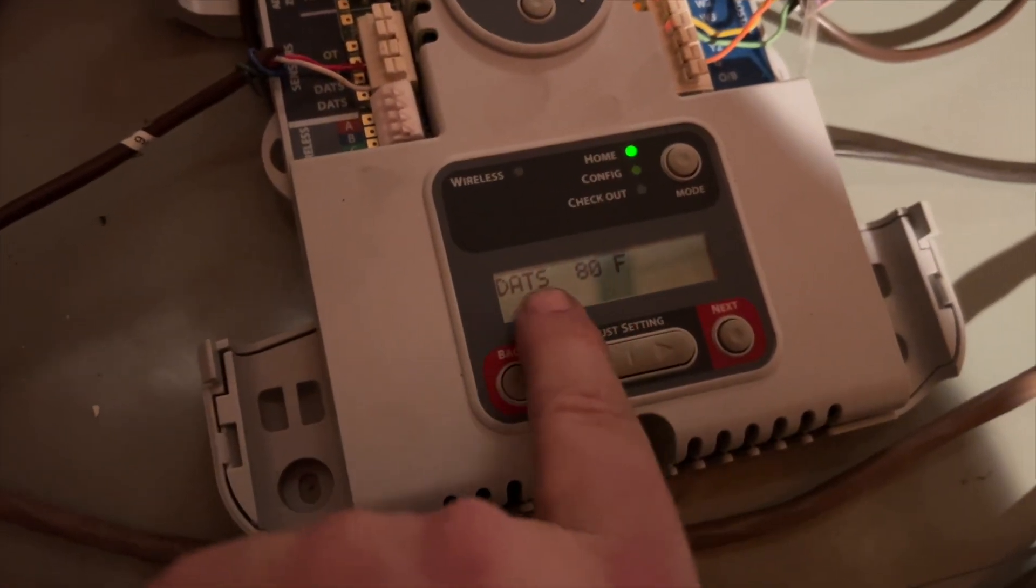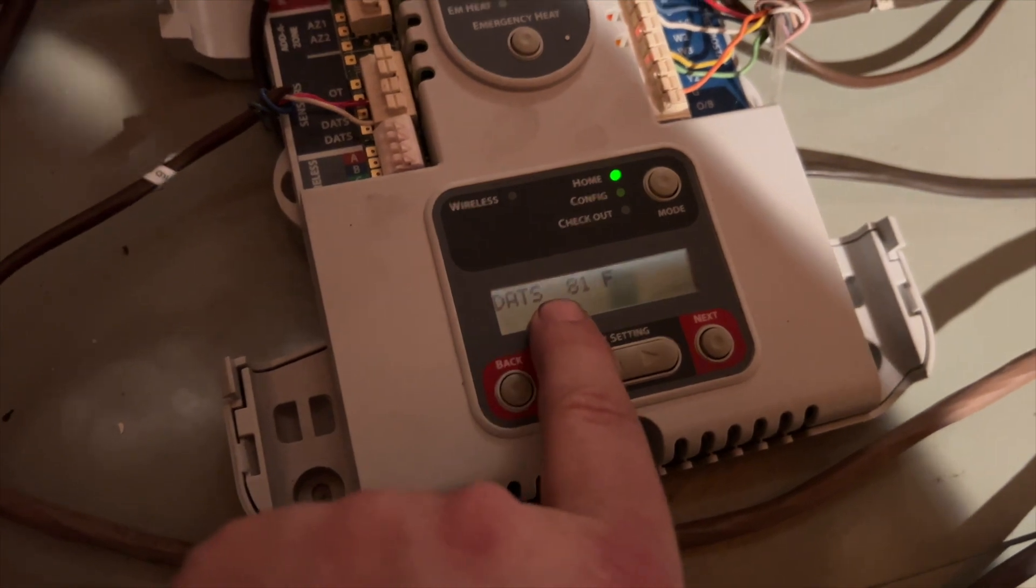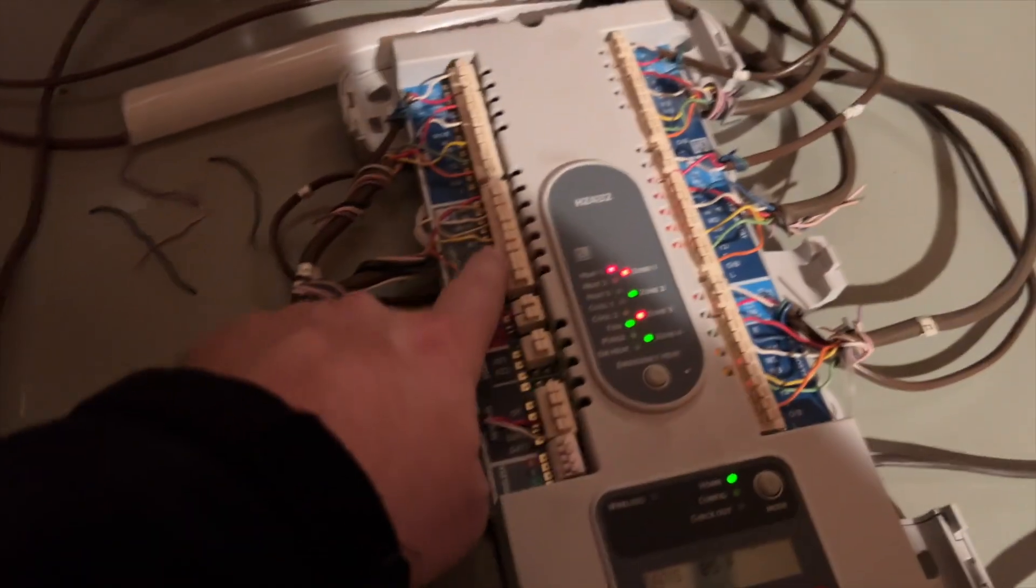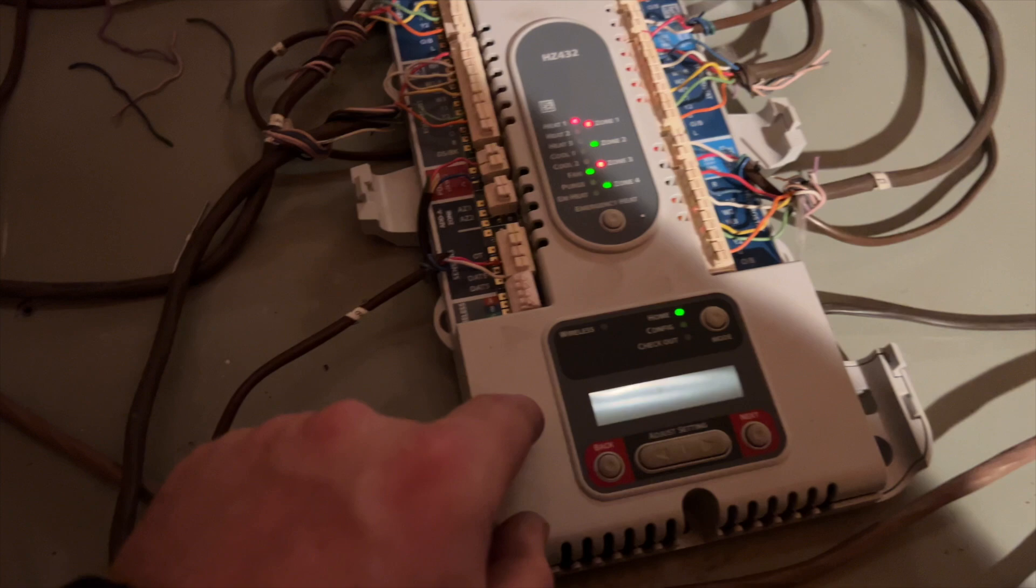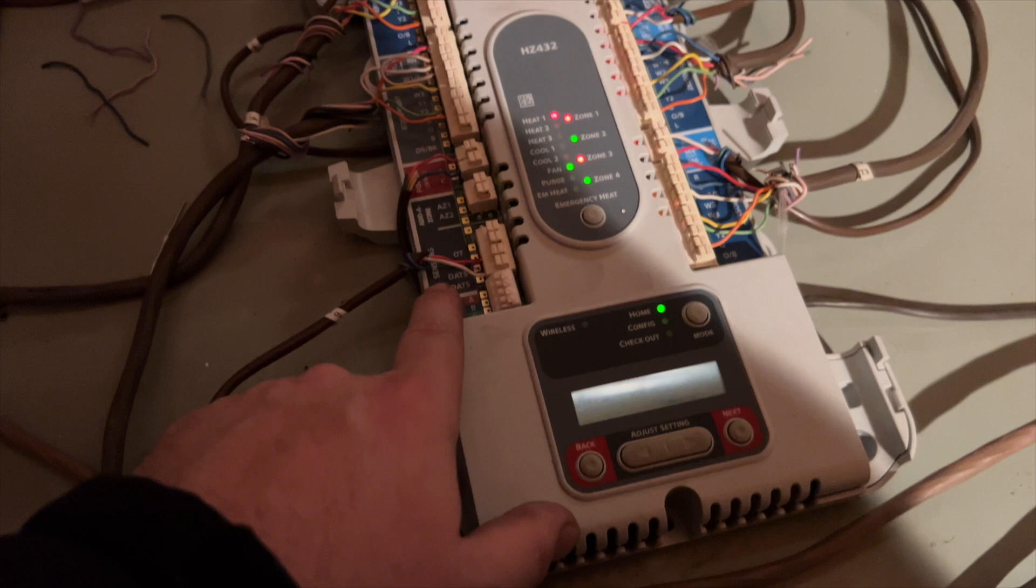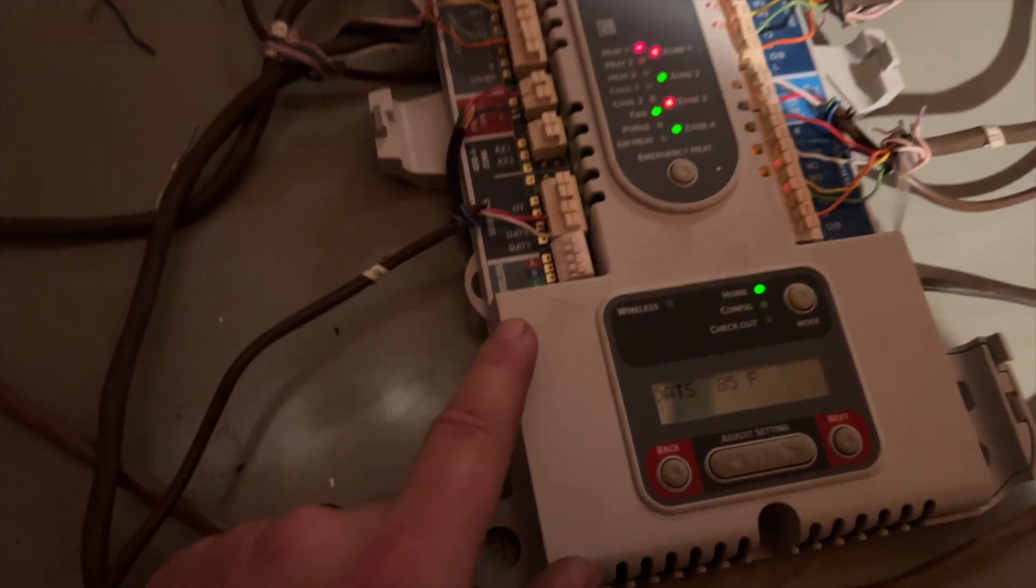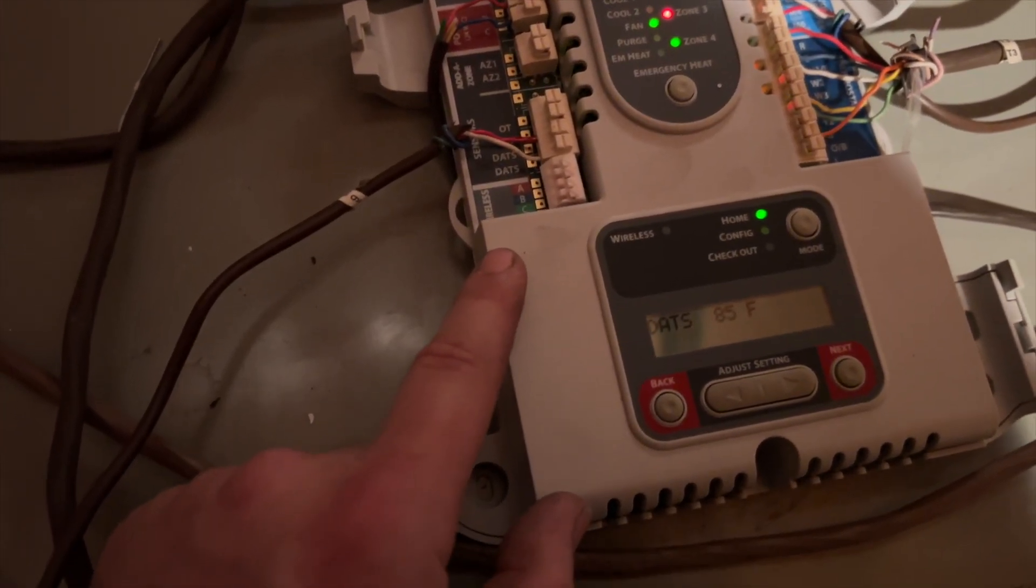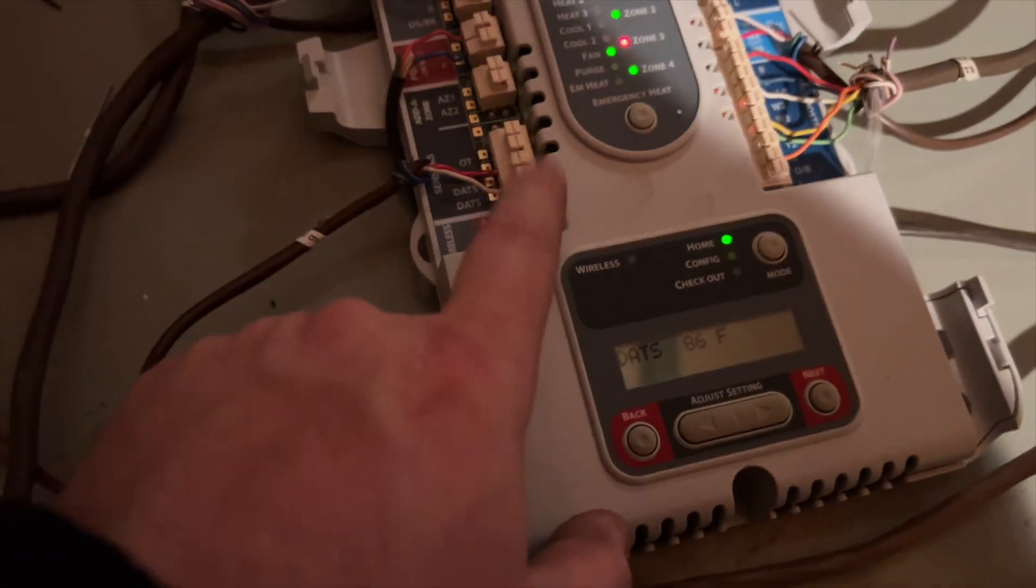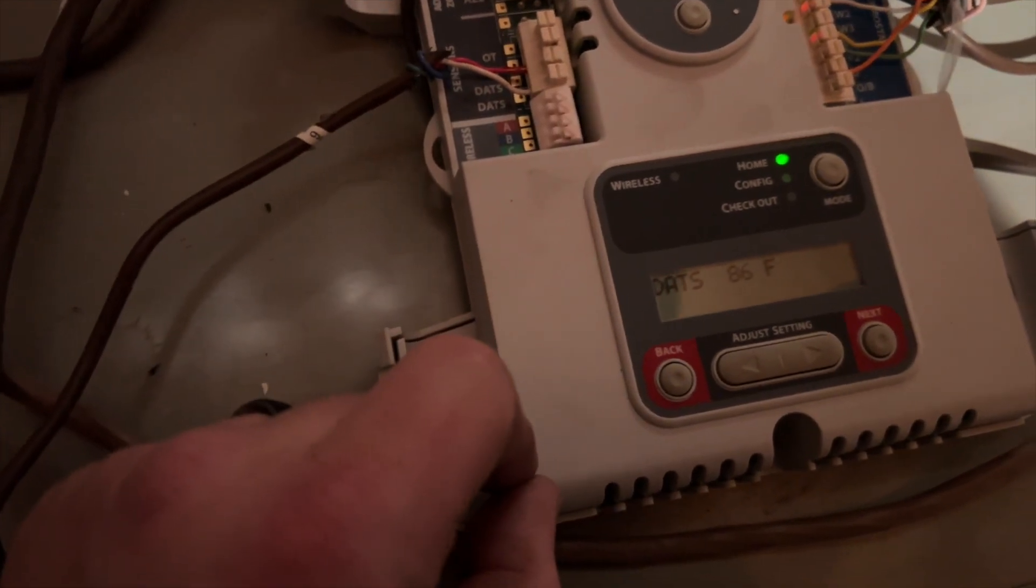Right here, this is our screen DATS - that's our discharge air temperature sensor. It's detecting 81 degrees Fahrenheit. So zone 1, 2, 3, and 4. This is going to the equipment. That's our 24 volts from our transformer. This is our DATS. And you can hook up an outdoor temperature sensor, and then you can also hook up the wireless thing right here too. And then that outdoor will go here on the two OTs.